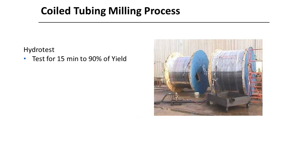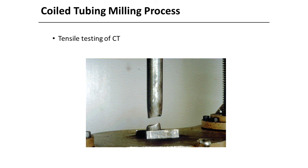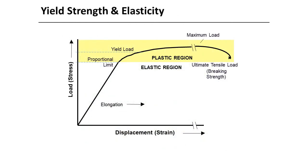The coiled tubing string is hydro tested for 15 minutes, then purged with nitrogen. Laboratory testing includes testing the end of each string for physical properties; full sections are pull tested, and micro hardness is measured at the heat affected zone and seam. Load testing provides a graph of stress versus strain, ensuring the pipe has correct strength and ductility, and measuring elongation from the yield point to ultimate tensile load.